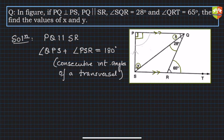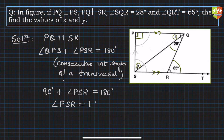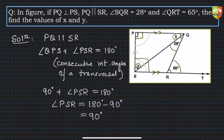So these two angles sum to 180 degrees. Angle QPS is given as 90 degrees, so 90 degrees plus angle PSR equals 180 degrees. Therefore, angle PSR is 180 minus 90, which equals 90 degrees.